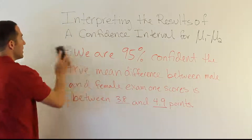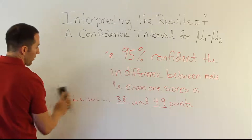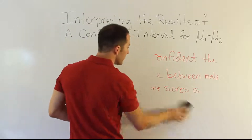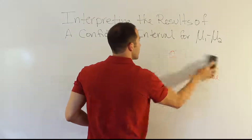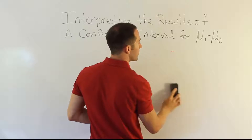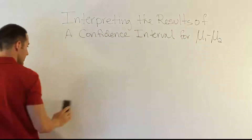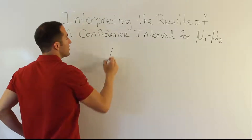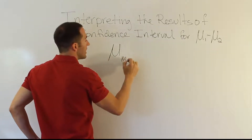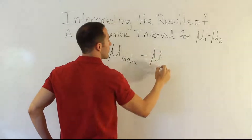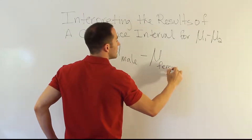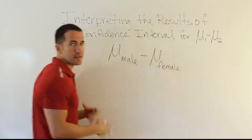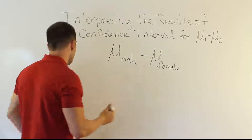We're going to pretend we looked at male and female test scores, and we're going to do it from the point of view of subtraction being done in the order of males minus females. So my interval is estimating this difference: the mean for males minus the mean for females — let's say for exam one test scores. Let's look at the cases.